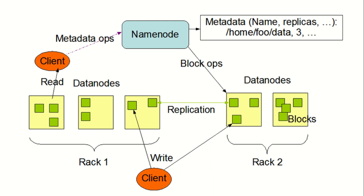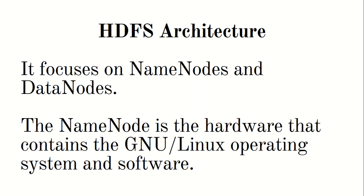Talking about the architecture, this is a general overview. The major actors are the name node and the data node. The whole working of HDFS shows how a client requests the name node for information about the actual placement of data, and how the name node responds back. We also have a concept of replication racks and metadata, which we'll talk about one by one.